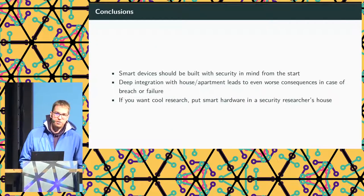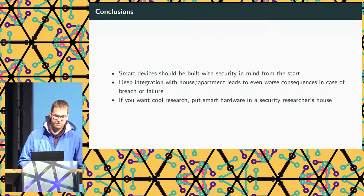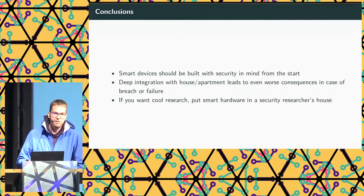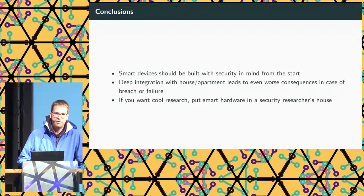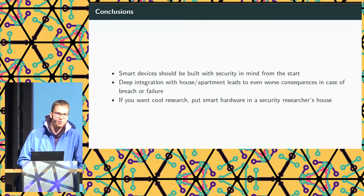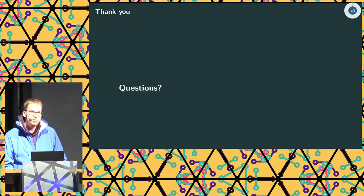In conclusion, smart devices should be built with security in mind from the start. These devices have really deep integration into the house or apartment, so it can lead to privacy issues and bad consequences if hacked or if the system goes down — like not being able to go out on the balcony. And if you want cool research, just put a smart device in a security researcher's house. Thank you — do you have any questions?